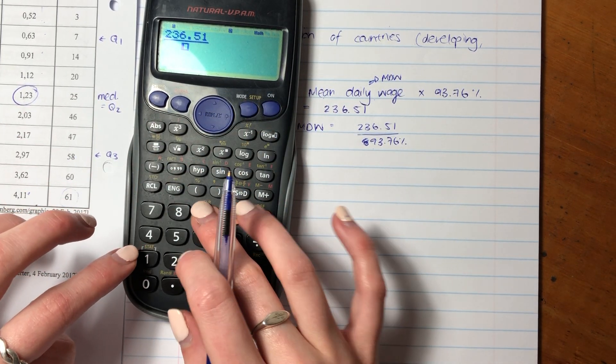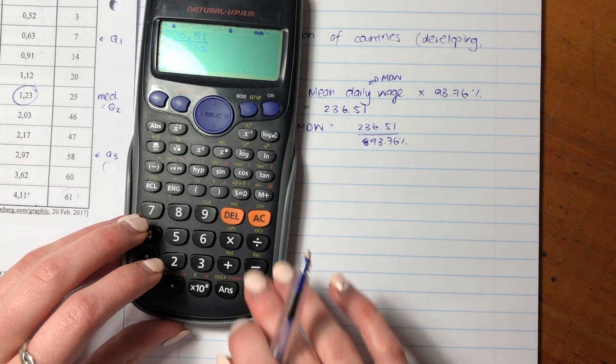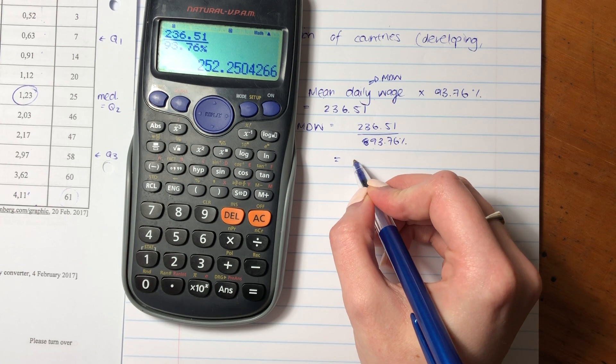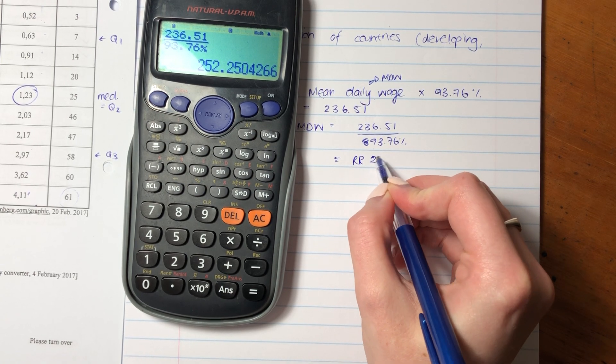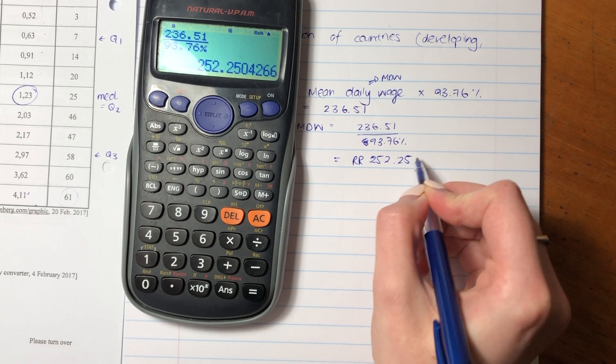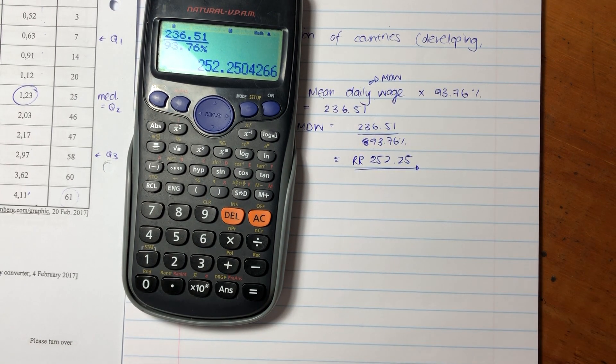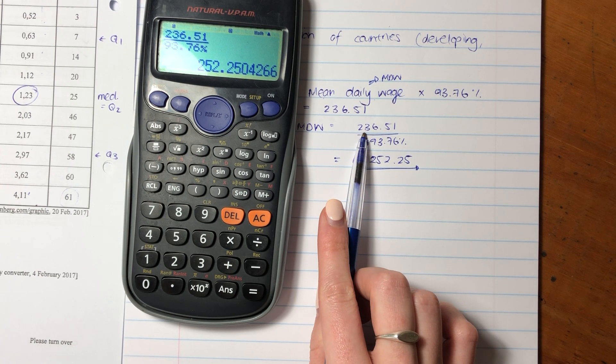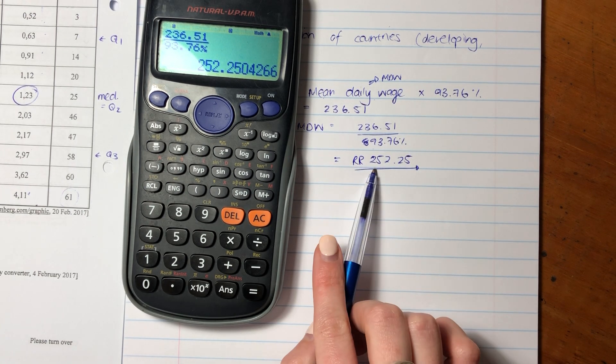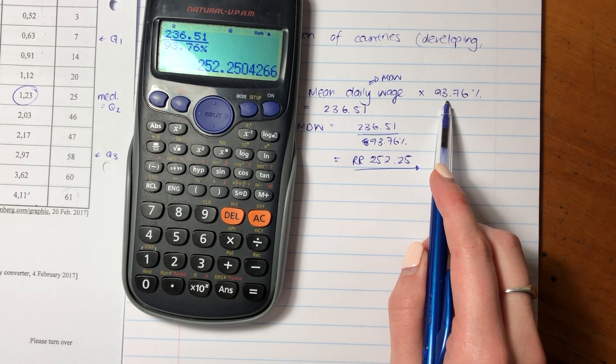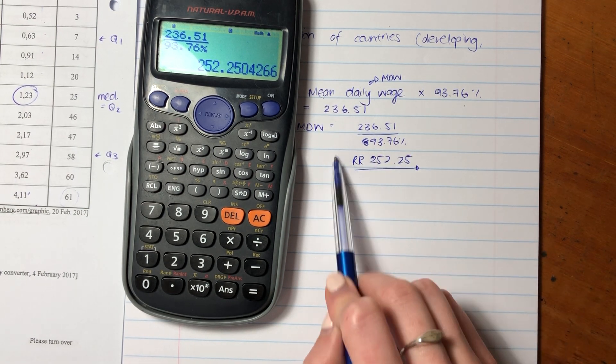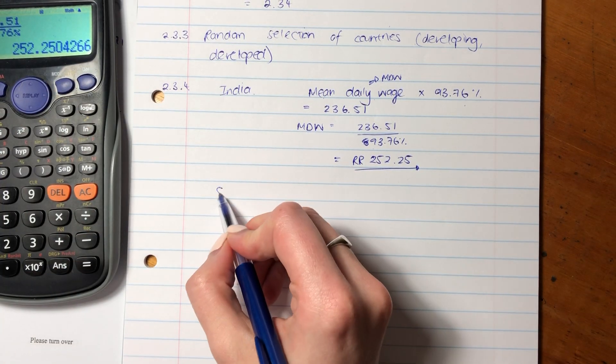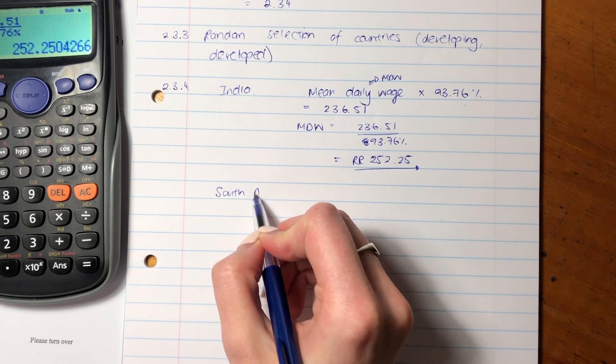And we should be able to get our answer. Remember to put in your percentage sign here. It makes a difference. So the mean daily wage in Russian rubles is 252.25. Now, we would expect it to be higher than the amount that is spent on a gallon of fuel, and it is, because remember, a gallon of fuel is only 93.76%, and this is 100% of the mean daily wage. Let's just reiterate what we did there and do it for South Africa.